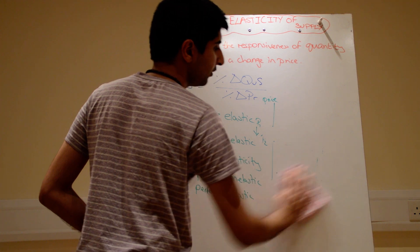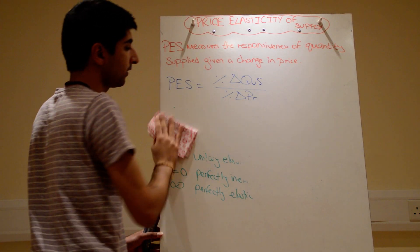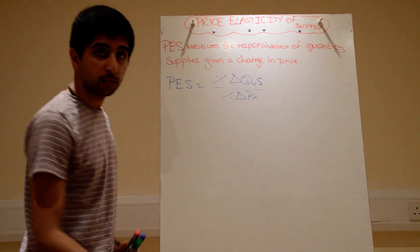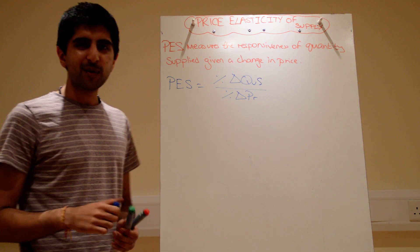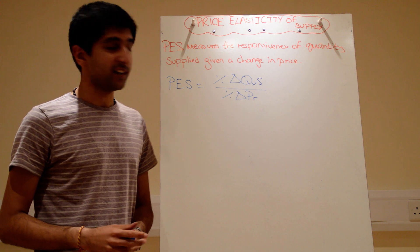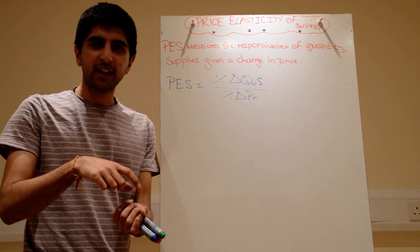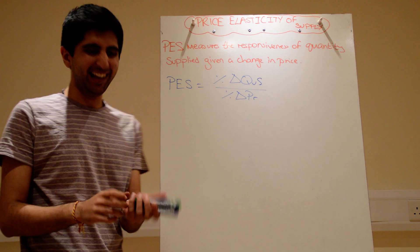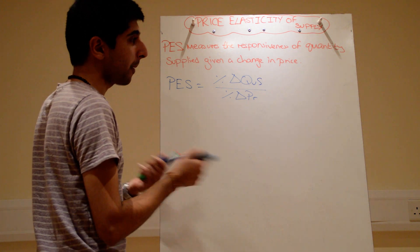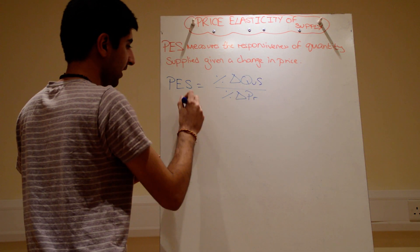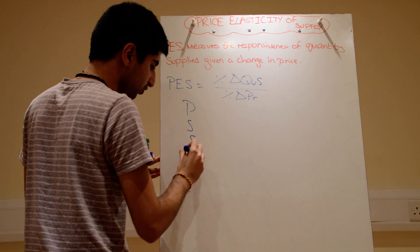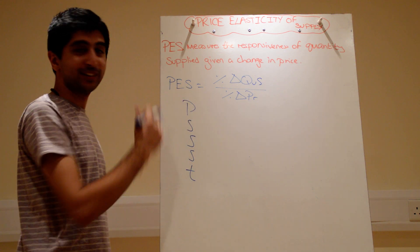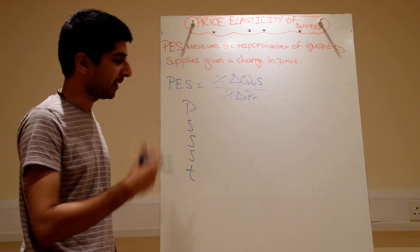So the question is: what determines whether a good is going to be price elastic or price inelastic in supply? The way I remember this — and my students love this — is pretend you're opening a can of pop. You open it and it goes 'psst.' That's how I remember it. You need to remember PSST, with three S's in there. It's difficult to find a memory device because there are no vowels in it, but it works.